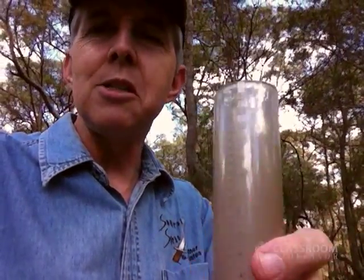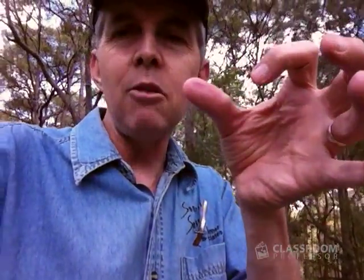So the result of having the funnel and then the smaller tube underneath is to multiply the height, or the depth of water, by 10. Someone's had to do a fair bit of math in there to make sure that the diameters were just right, so the area of the rain being collected was 10 times the size of the small tube.